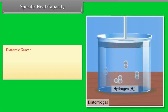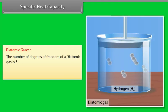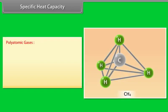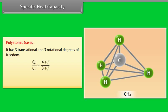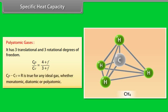For diatomic gases, the number of degrees of freedom of a diatomic gas is 5, and CP by CV is equal to 9 by 7. Polyatomic gases have 3 transitional and 3 rotational degrees of freedom. CP by CV is equal to 4 plus F upon 3 plus F. CP minus CV is equal to R is true for any ideal gas whether monoatomic, diatomic or polyatomic.